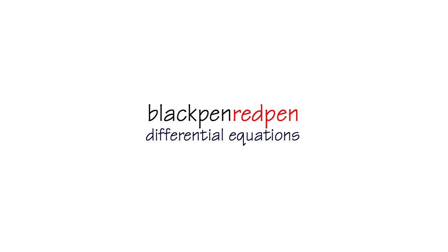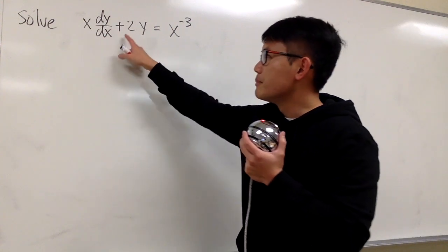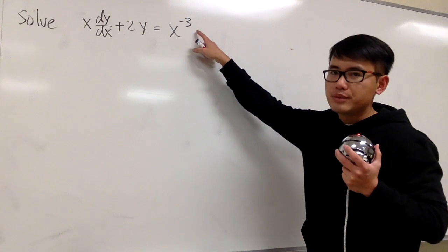Black pen, red pen, yay! Let's solve this first-order linear differential equation. We have x times dy dx plus 2y, and this is equal to x to the negative 3.